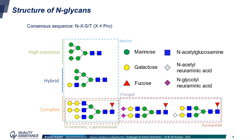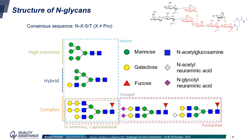N-glycans are linked to an asparagine residue. This asparagine should be part of a consensus sequence consisting of the asparagine, followed by any amino acid except proline, and a serine or a threonine. The core structure is made of two N-acetyl-glucosamines and three mannose residues. The first N-acetyl-glucosamine can be fucosylated or not. We can then have different classes of N-glycans, such as high mannose, hybrid glycans, or complex glycans, and all these different structures confer specific properties to the glycoprotein.